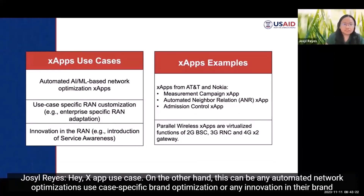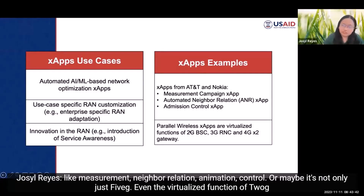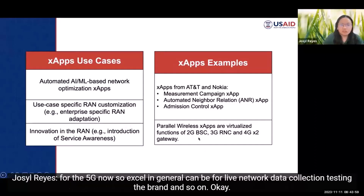XApp use cases include automated network optimizations, use-case-specific RAN optimization, and innovation in the RAN — such as measurement, neighbor relation, and mission control. It's not only for 5G; virtualized functions of 2G, 3G, and other radio access technologies are also supported. XApps in general can be used for live network data collection, testing the RAN, and so on.